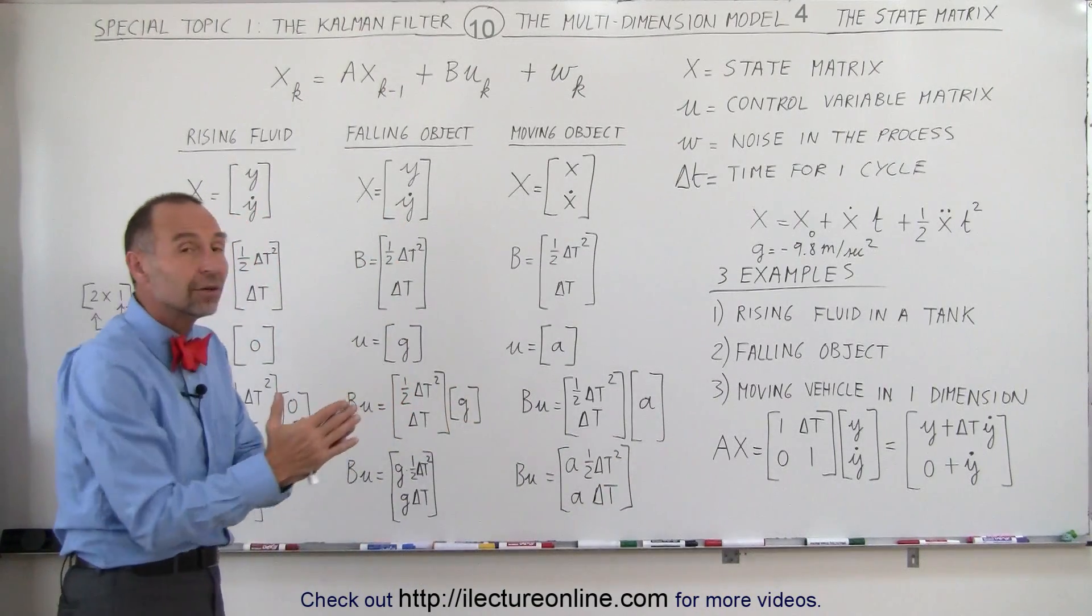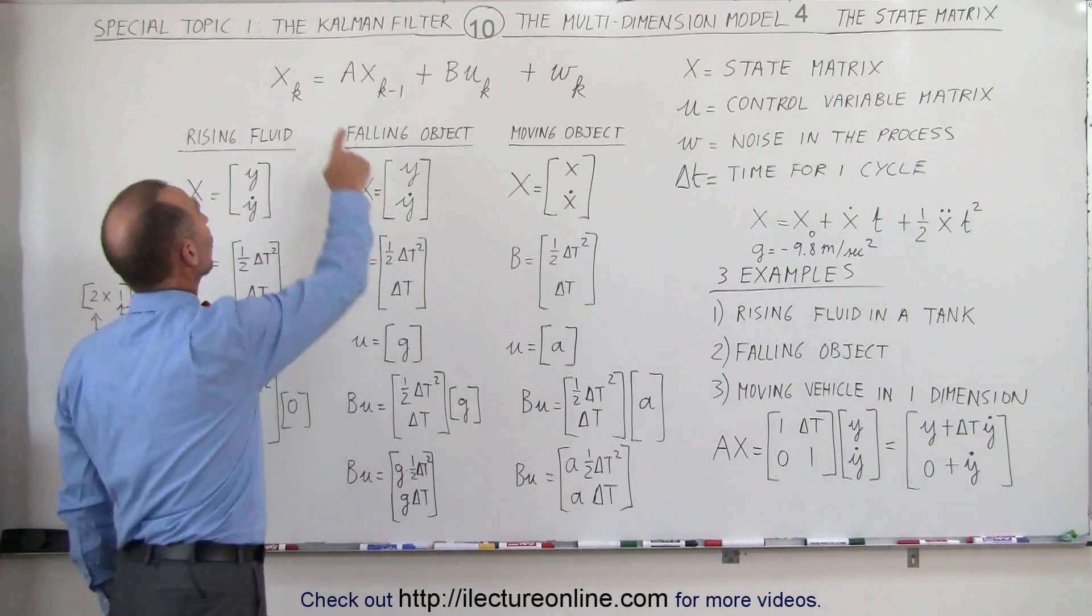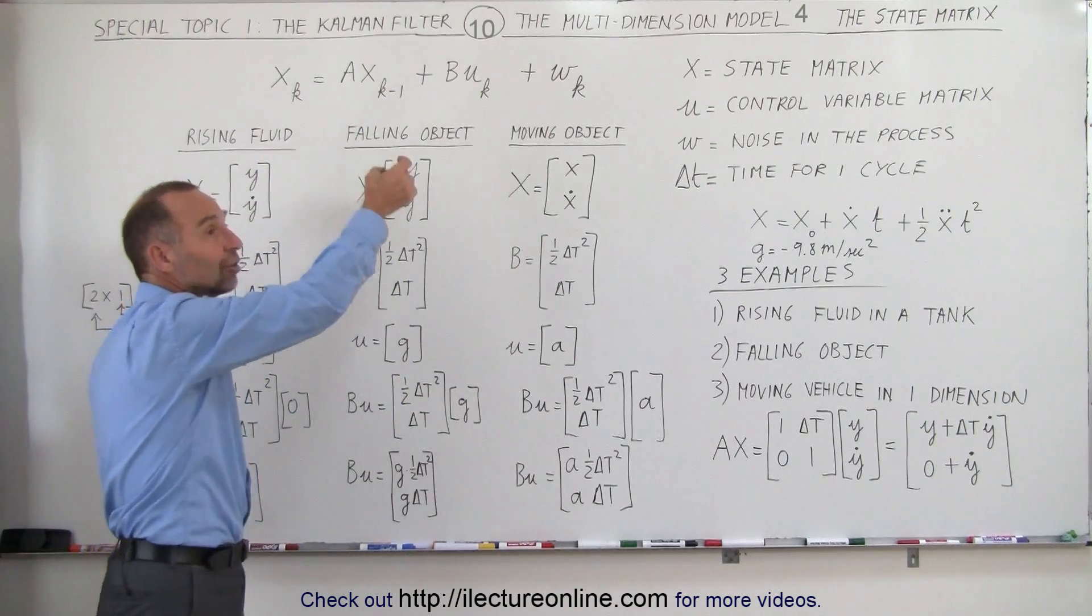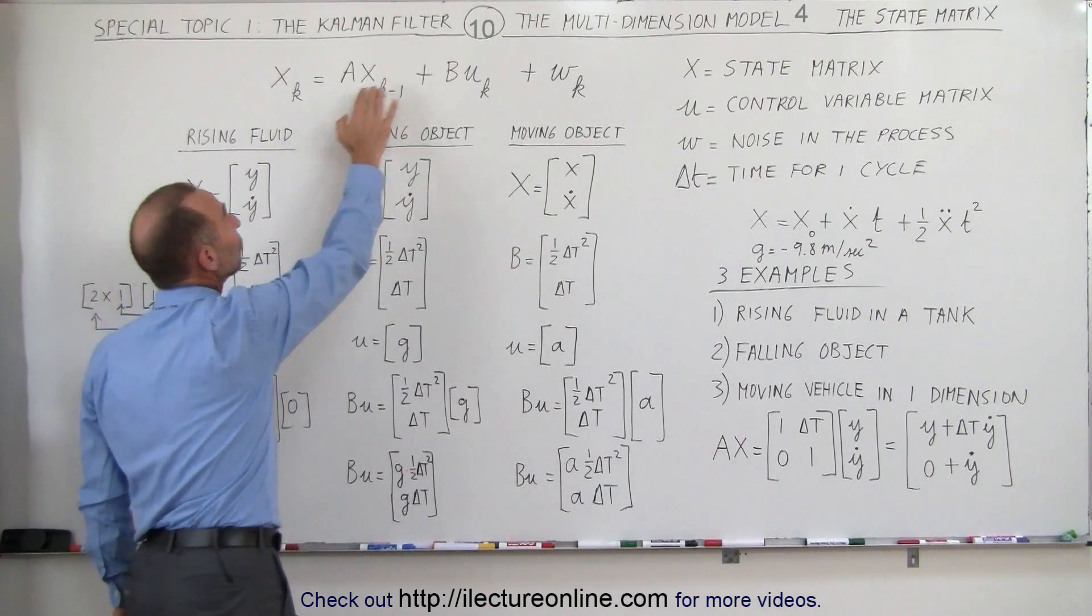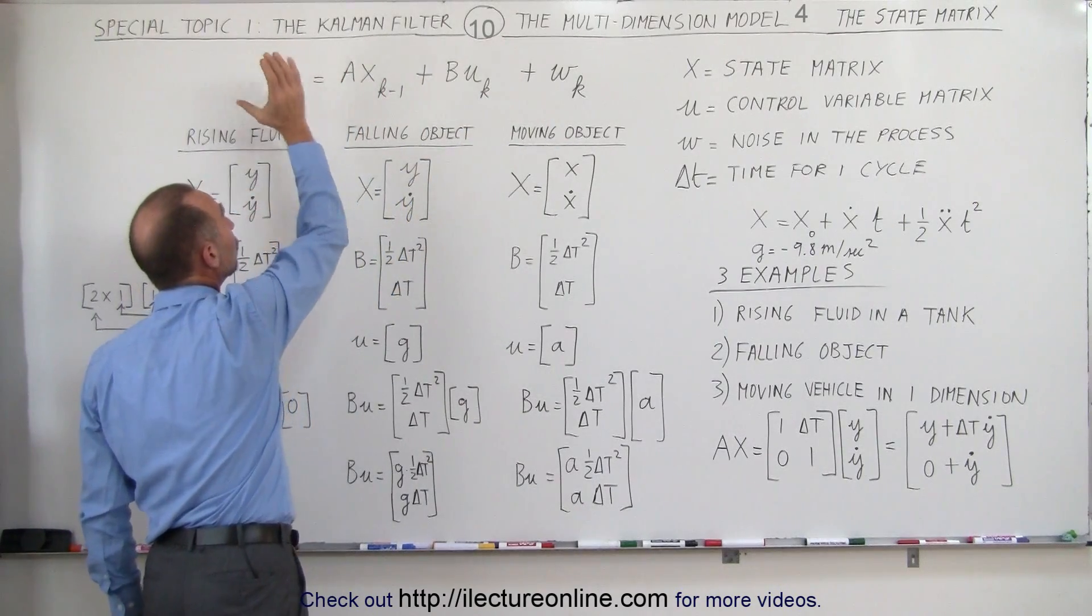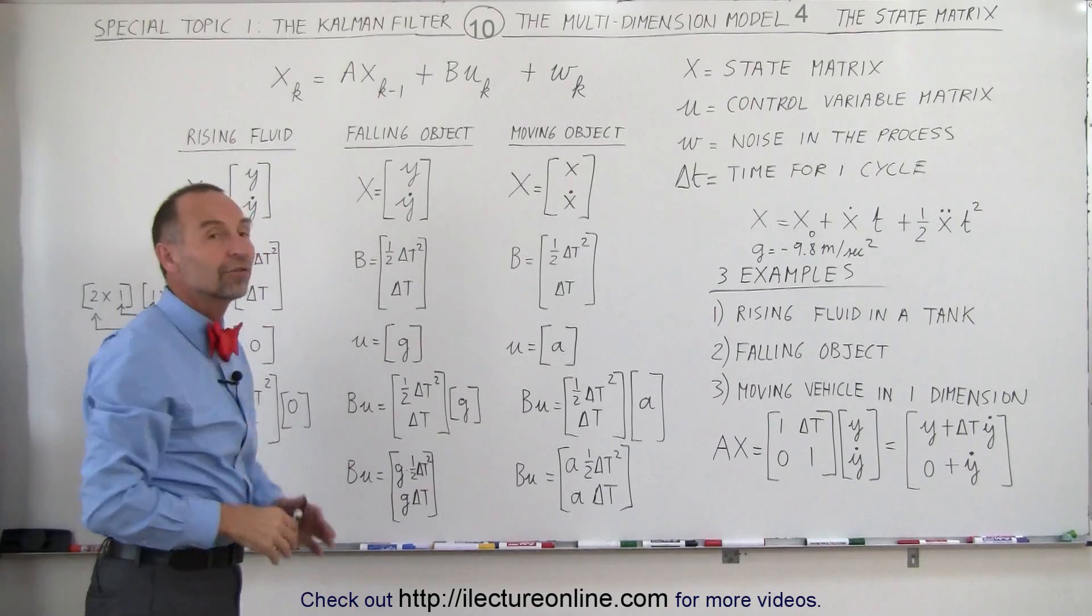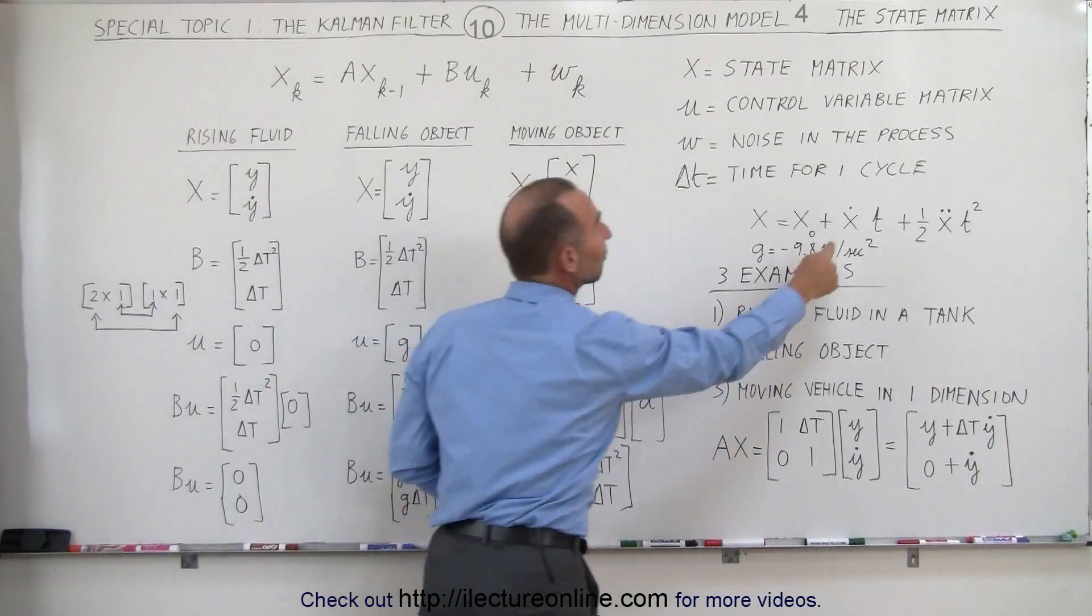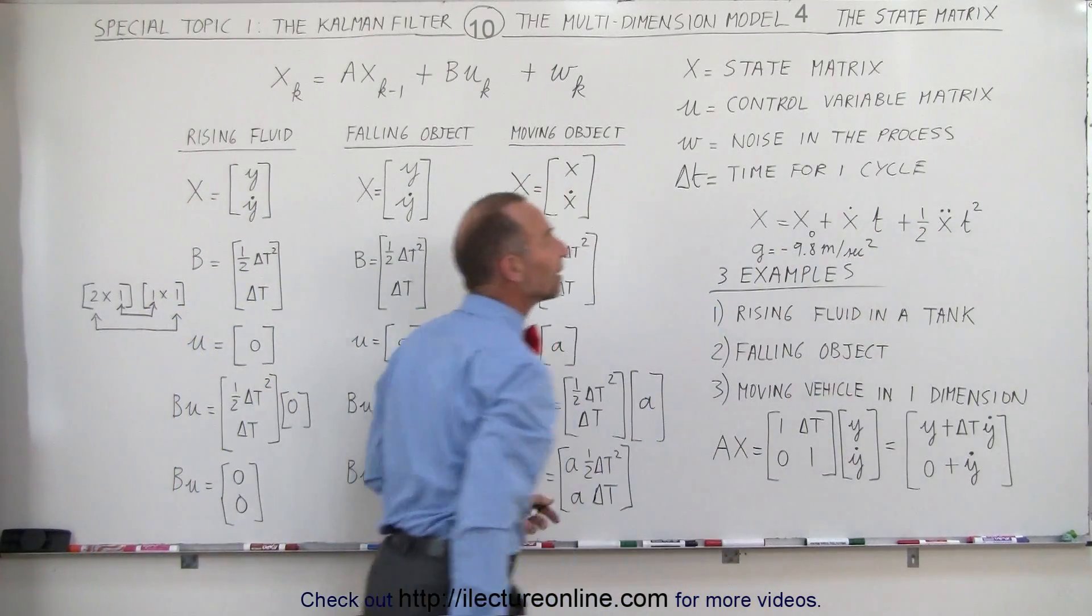When we add the two together, we then get the total change for the new state in position and velocity. By adding these two multiplications together, we get the new position and we get the new velocity as a result of the effect by the velocity and the effect by the acceleration.